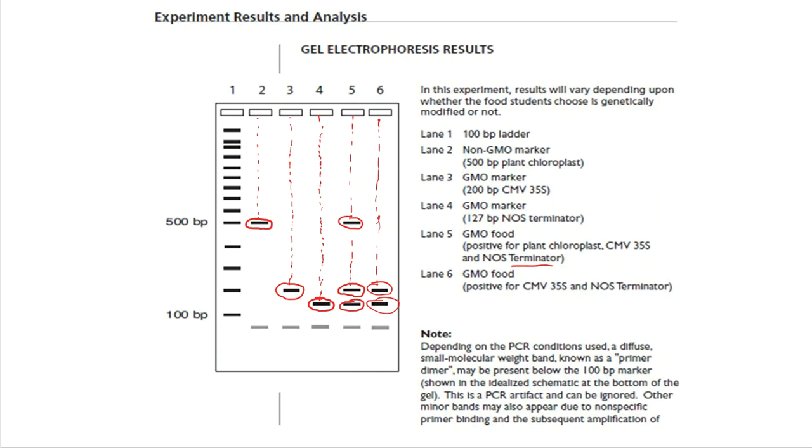In this video what I want to do is talk about how this is actually accomplished. Now what you see on the screen, notice that we looked for something called CMV35S and NOS Terminator. It is very common in the genetic engineering world to have this reaction to focus in on a certain piece of the DNA that we want to know more about or that we want to study or that we want to splice.